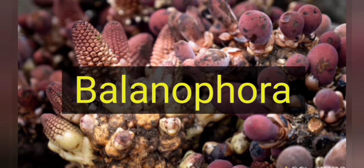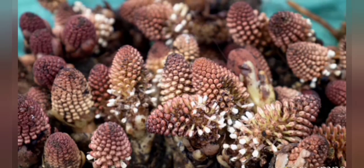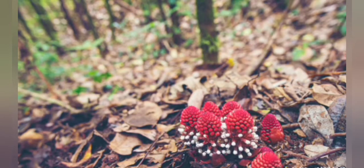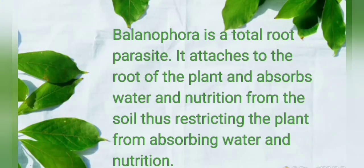Balanophora is a total parasitic plant which attaches to the roots of the host plants or on the ground to get its nutrition. These plants fully depend on the host plant to get nutrition and water. Balanophora is a total root parasite — it attaches to the roots of the plant and absorbs water and nutrition, thus restricting the host plant from absorbing water and nutrition.